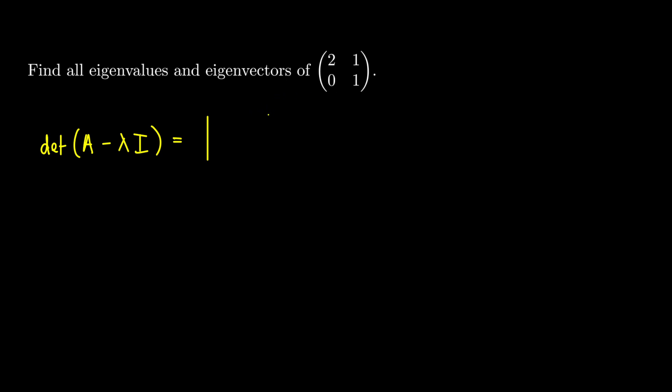So this is going to just be our matrix A. So here, 2, 1, 0, 1 minus lambda times 1, 0, 0, 1 here. And you'll be able to see that this is just 2 minus lambda, 1, 0, 1 minus lambda. And here, this is just going to be, because we're dealing with an upper triangular matrix here, this is just going to be multiplying everything along the main diagonal, which is this. So this is the determinant, and we know that this should be equal to 0.